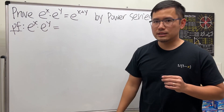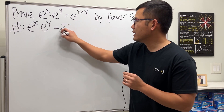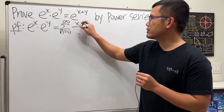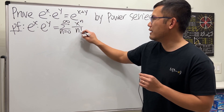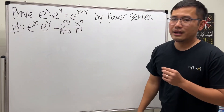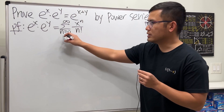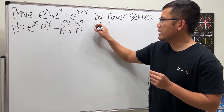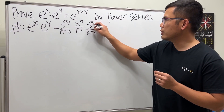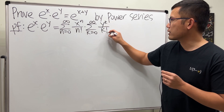What's the series for e to the x? That's the series: n goes from 0 to infinity, and we will have x to the nth power divided by n factorial. For e to the y, make sure you don't use n again — let's multiply series. Use k equals 0 to infinity, and then we will have y to the k over k factorial.